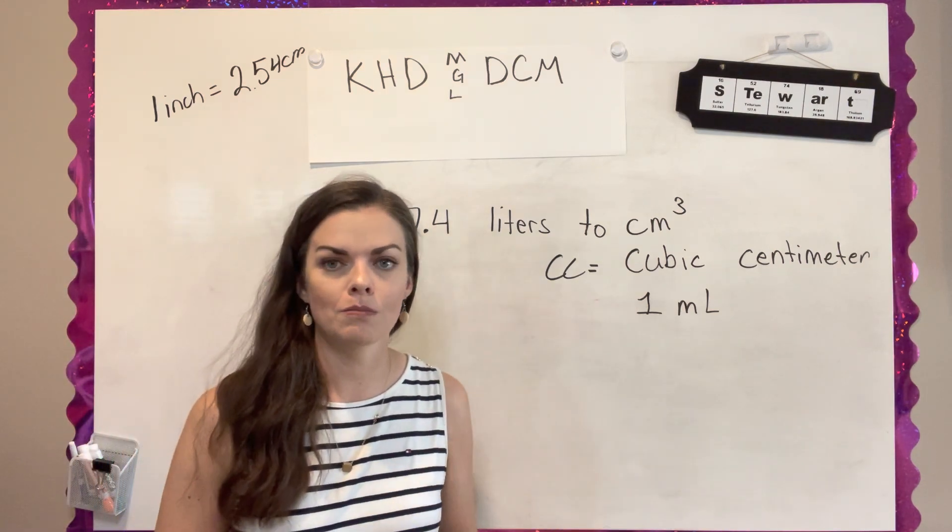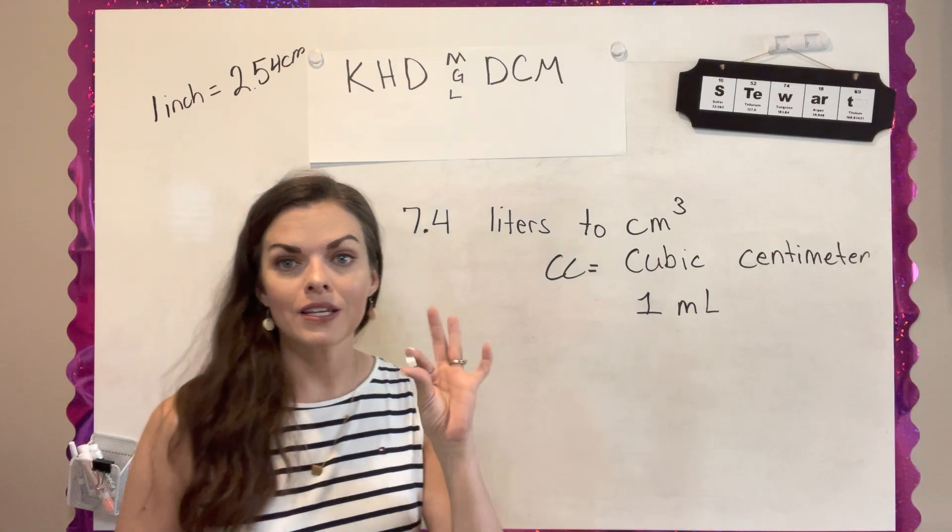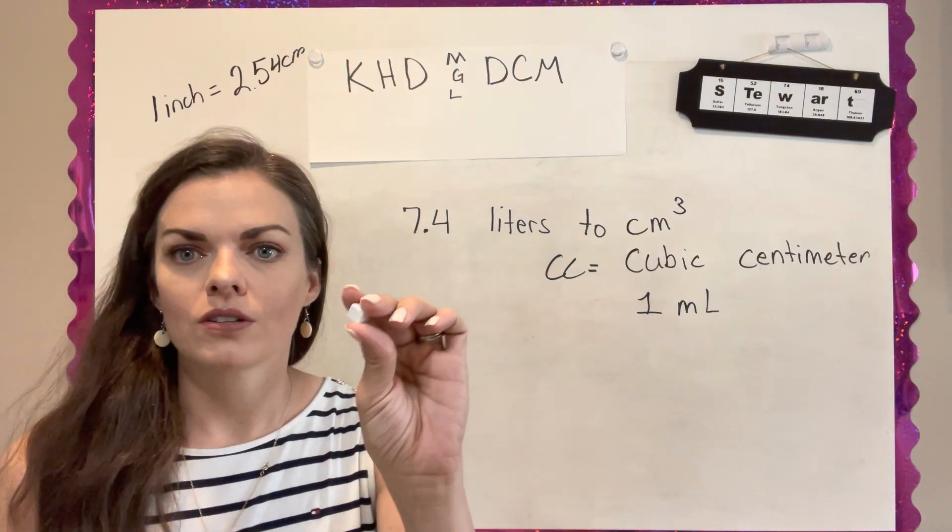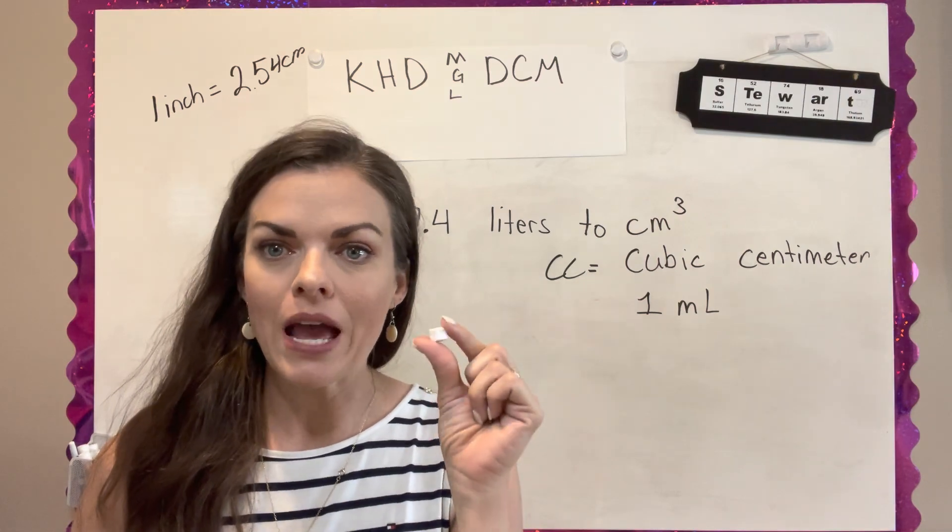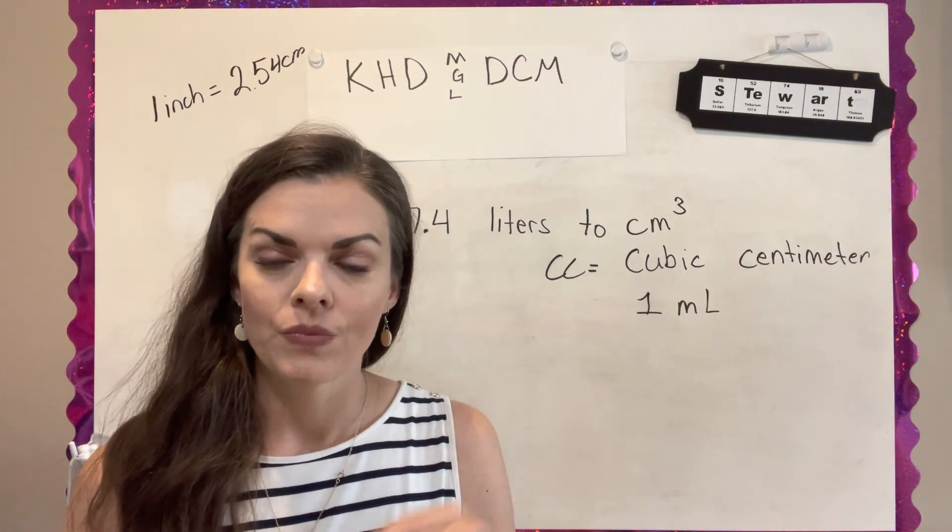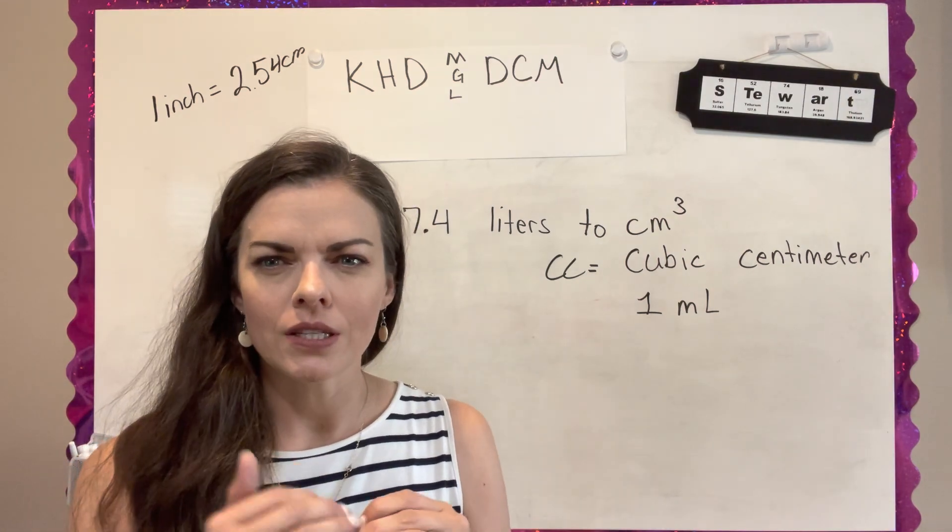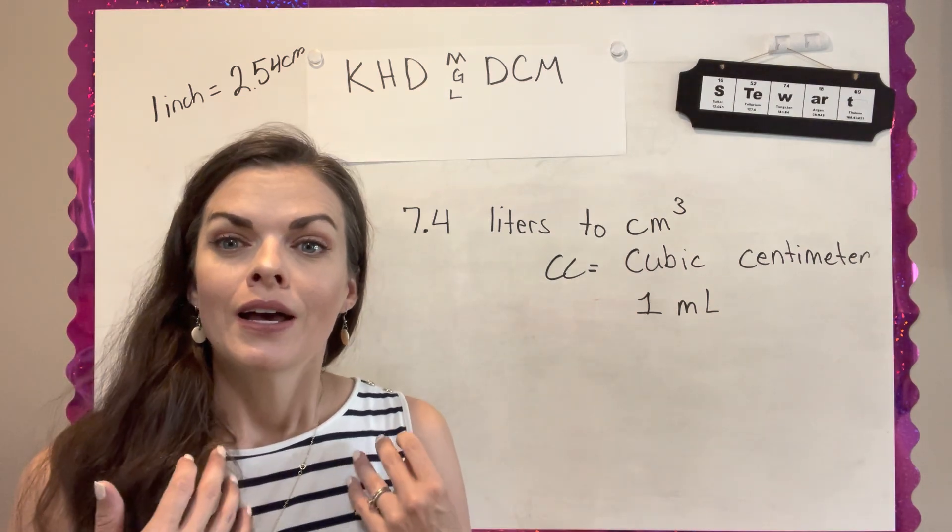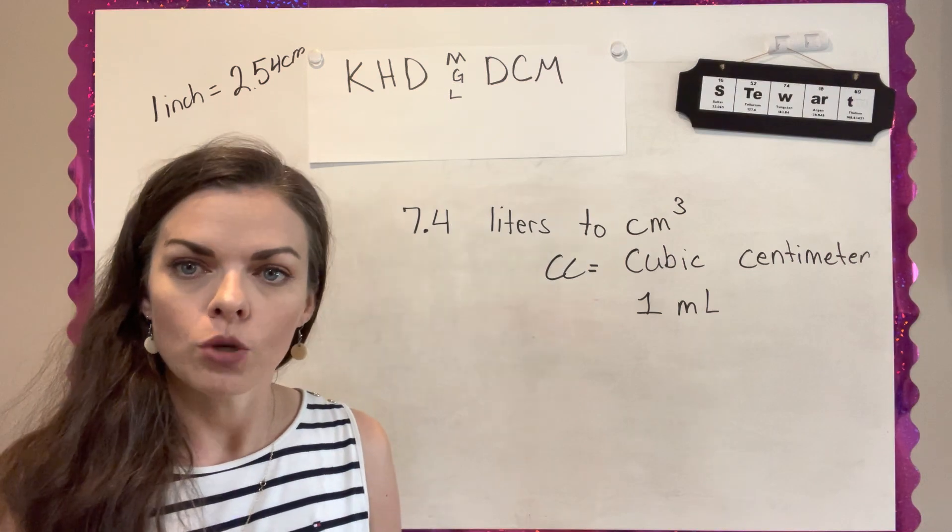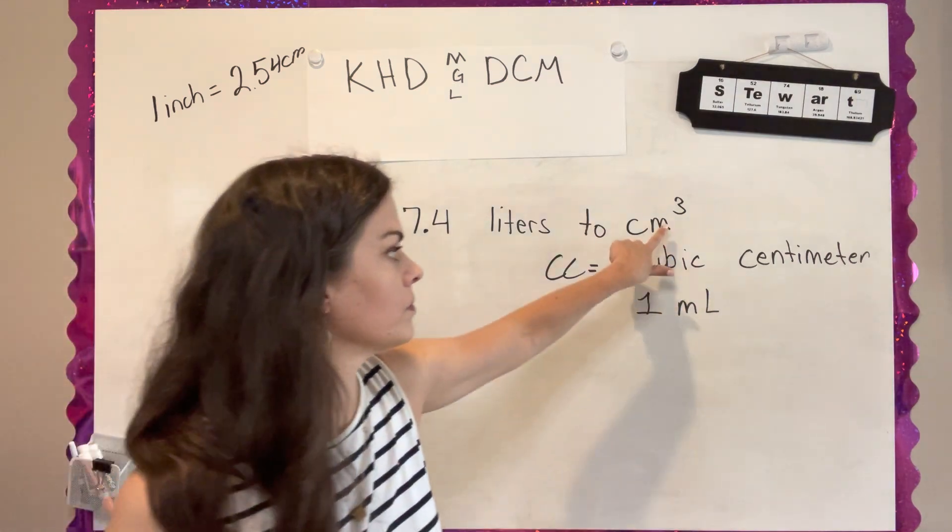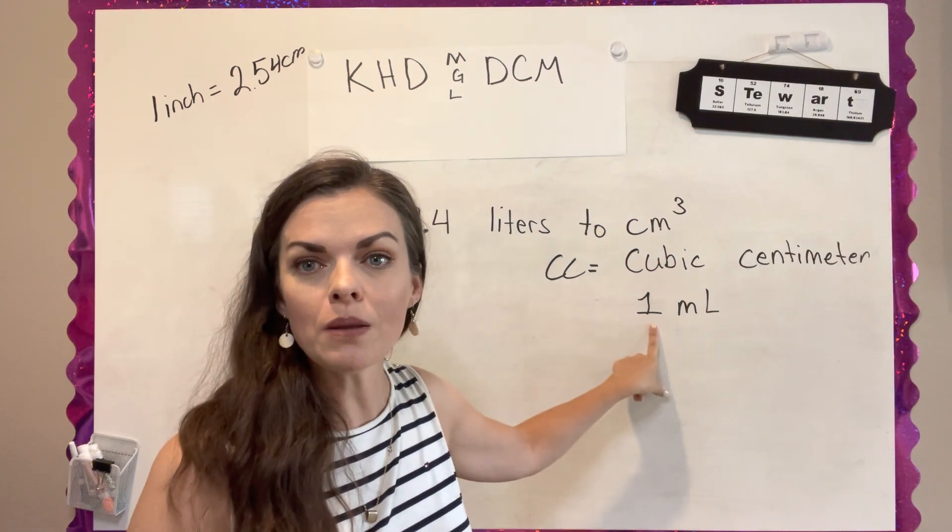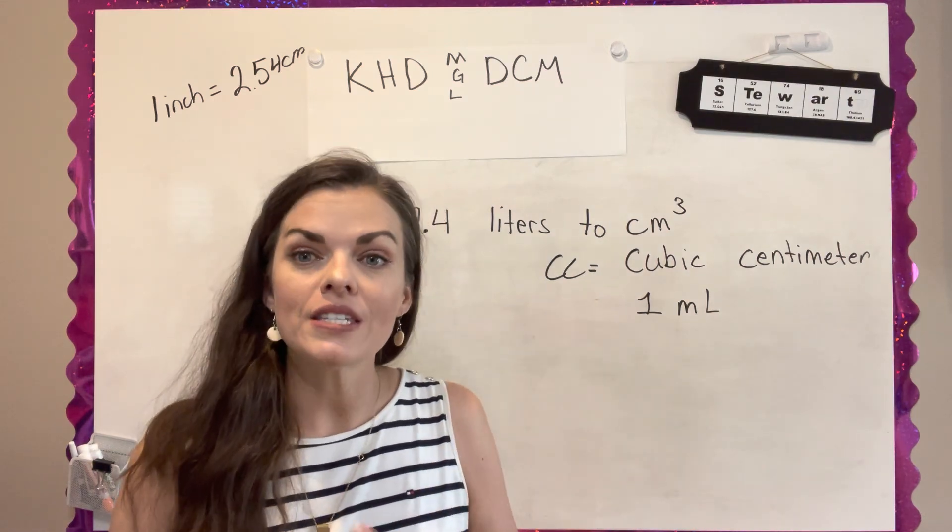You see this a lot of times if you ever watch medical shows, they'll say, give me 50 cc's of some medicine. So they're measuring out in cc's. But when you have a liquid and you're measuring out cc's, it's the same as one milliliter. And you may have a graduated cylinder or a measuring cup that measures in milliliters. And that's how we measure liquids. And so a cubic centimeter, a cc, and one milliliter are all the same unit.